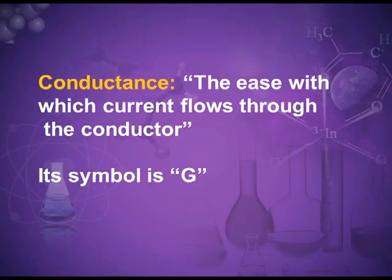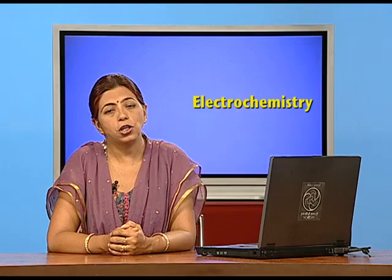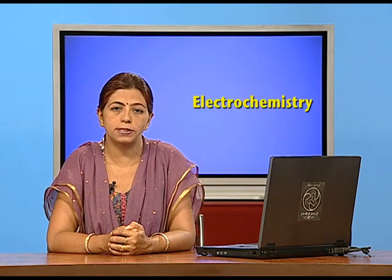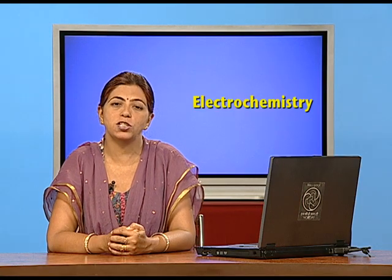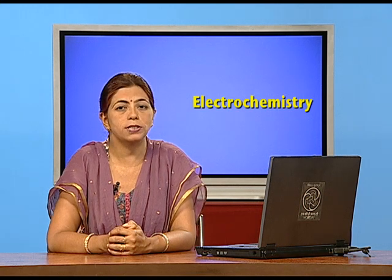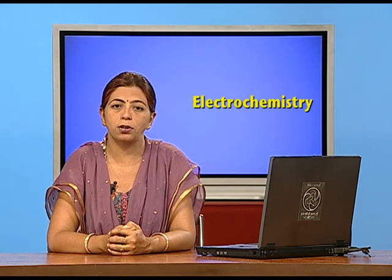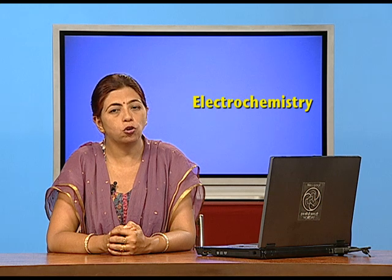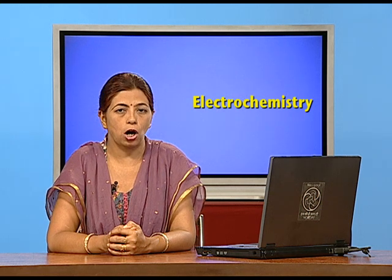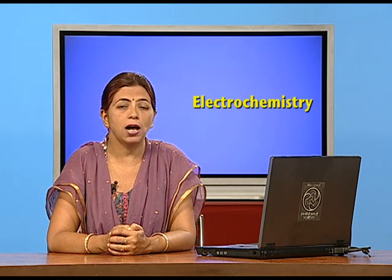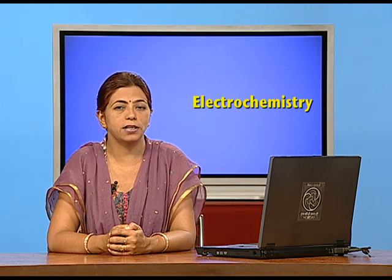Conductance is the reciprocal of resistance. It is the ease with which the current flows through a conductor. Its symbol is G. Initially its symbol was capital C, but it has been replaced by G because capital C is used as a symbol for coulombs and concentration. So now we use G as the symbol for conductance.